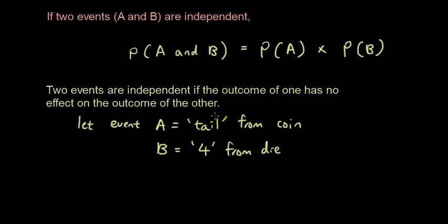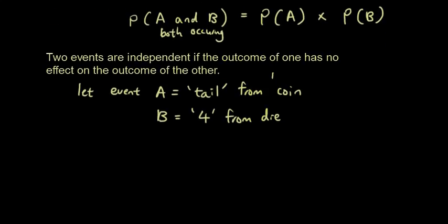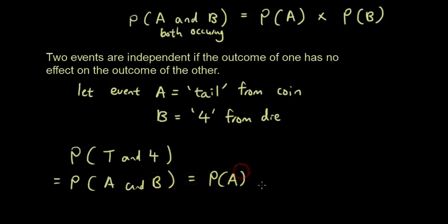So if you want to find out the probability of both of these events occurring, so I should have mentioned that in the formula here, the probability of A and B both occurring is the probability of A times the probability of B. So if I want to find out the probability of getting a tail and 4, that's the probability of A and B.